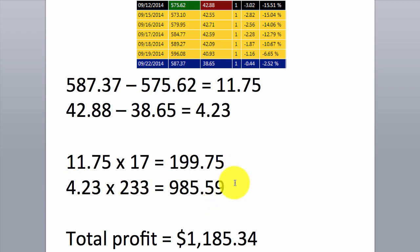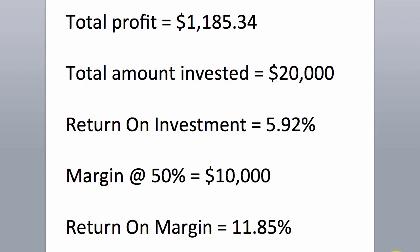When we add those two numbers together, we get a total profit on the pair trade of $1,185.34. With a total investment of $20,000 — $10,000 on each leg — the return on investment is 5.92%. Or, if trading on margin at 50%, we would have put up $10,000, giving a return on margin of 11.85%.